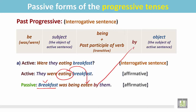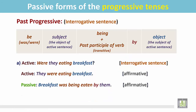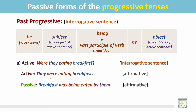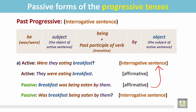Then the preposition by. And the subject of the active sentence becomes the object: them. The passive form is: 'Breakfast was being eaten by them.' This is still a statement in the affirmative form. This statement should be changed into an interrogative sentence. To do that, just place the be verb at the beginning of the sentence before the subject, and that's all.